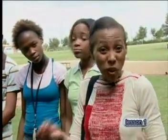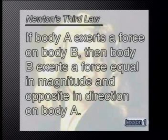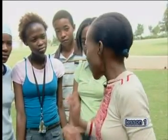Sir Isaac Newton made similar observations when he studied the way bodies or objects interact with each other, and he described these observations in his third law. Newton's third law states that if body A exerts a force on body B, then body B exerts a force equal in magnitude and opposite in direction on body A. You may be more familiar with the version that says: for every action there is an opposite but equal reaction. This applies to every interaction between two bodies or objects. There are no exceptions.